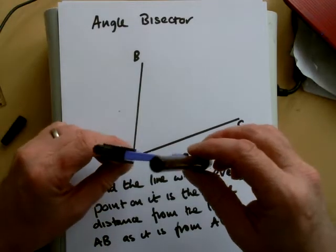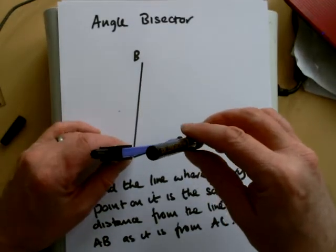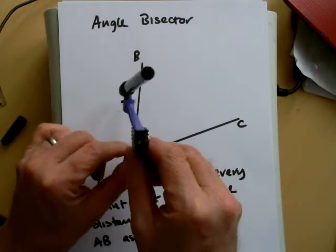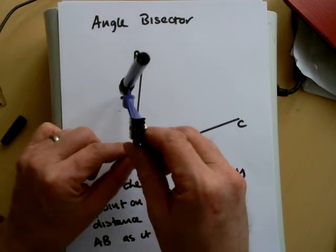So again we need compasses to do this. Take the compass and then mark a point on the line AB.